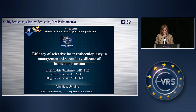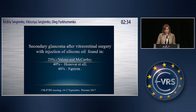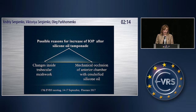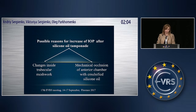Intraocular hypertension occurs in 5 to 48% of cases associated with the surgery of retinal detachment with silicone oil tamponade. Intraocular hypertension can persist even after silicone oil removal. Possible reasons for this phenomenon are mechanical occlusion of the anterior chamber with emulsified silicone oil, or changes in the trabecular meshwork caused by its occlusion.